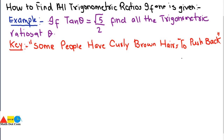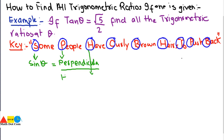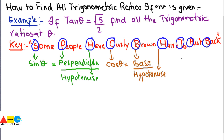Let's see what it means. We take S of 'some,' P of 'people,' H of 'have,' C of 'curly,' B of 'brown,' H of 'hairs,' T of 'to,' P of 'push,' and B of 'back.' S is for sin theta, which equals perpendicular divided by H for hypotenuse. C is for cos theta, which equals B for base divided by H for hypotenuse. T is for tan theta, which equals P for perpendicular divided by B for base.